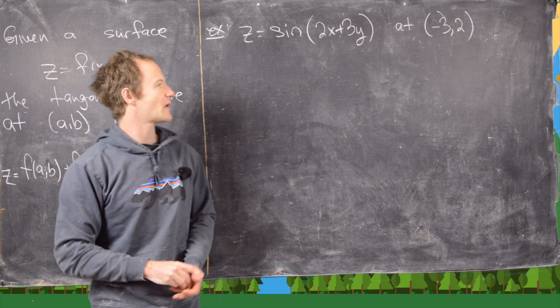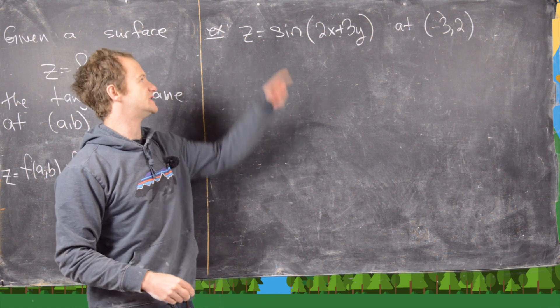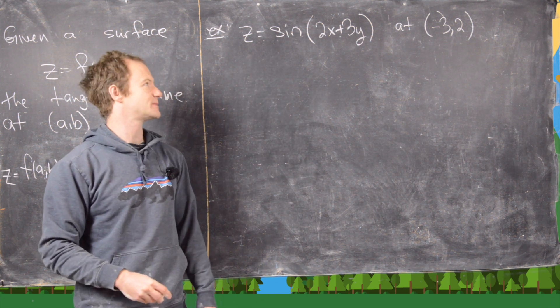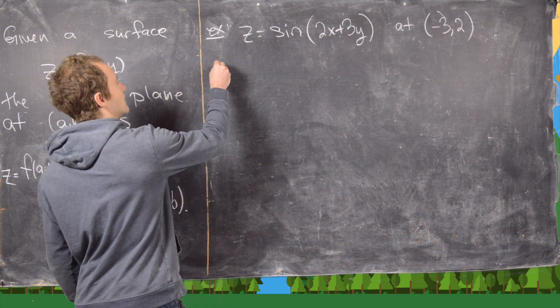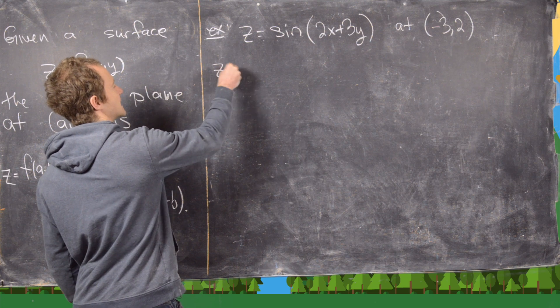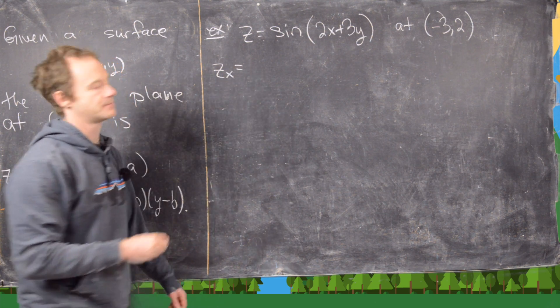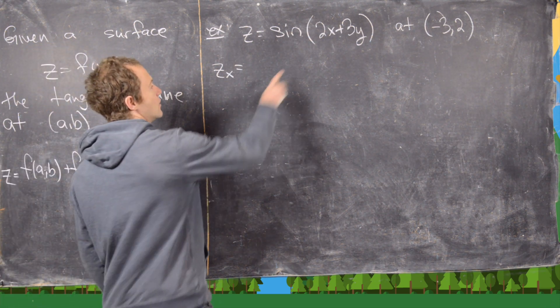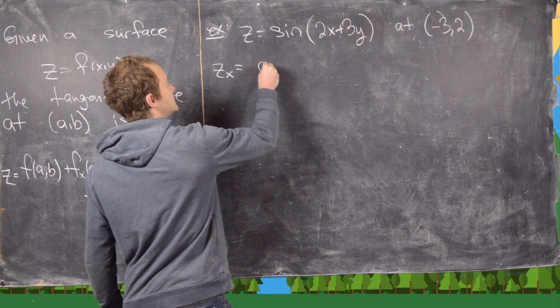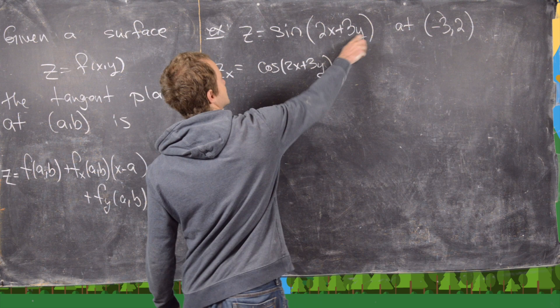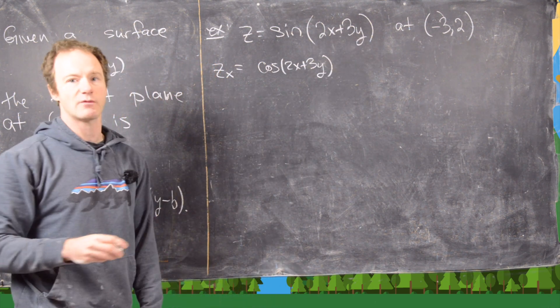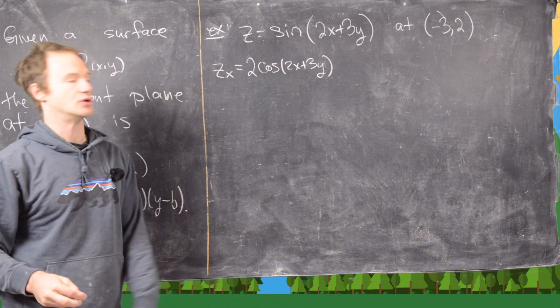The next example I want to look at is this: z equals sine of (2x plus 3y) at (-3, 2). Let's look at the partial with respect to x, I'll call that z sub x. Notice here we're going to get cosine of (2x plus 3y) times the derivative of (2x plus 3y) with respect to x. That's going to give us a 2.